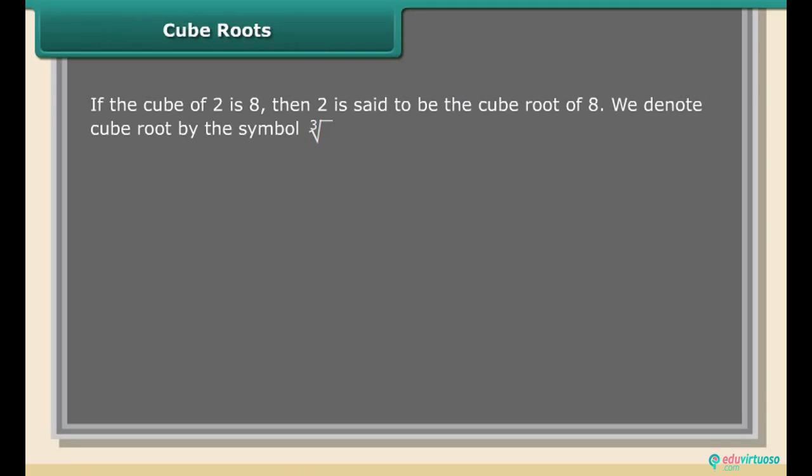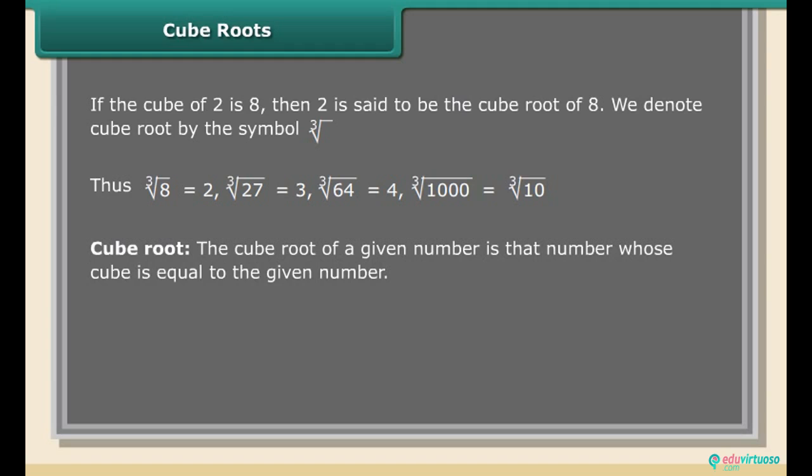Cube roots: If the cube of 2 is 8, then 2 is said to be the cube root of 8. We denote cube root by the symbol ∛. Thus ∛8 = 2, ∛27 = 3, ∛64 = 4, ∛1000 = 10. The cube root of a given number is that number whose cube is equal to the given number.